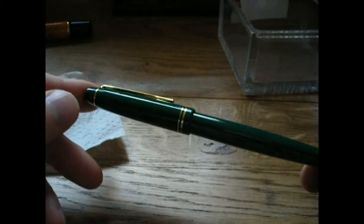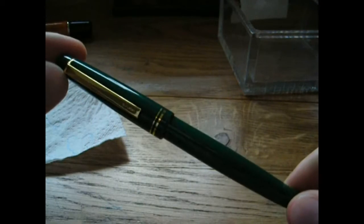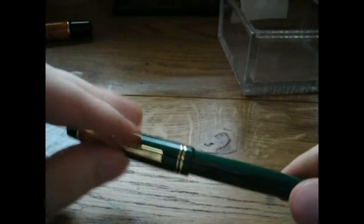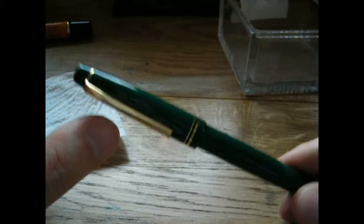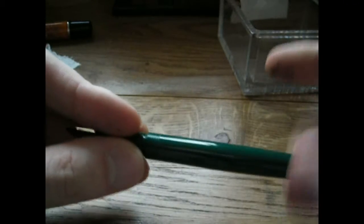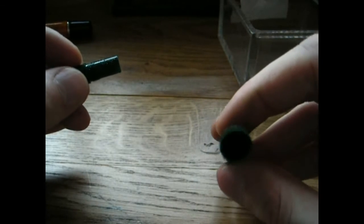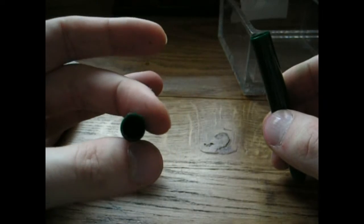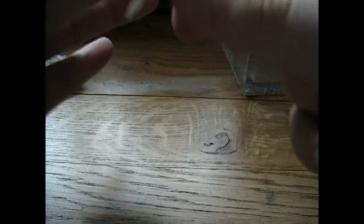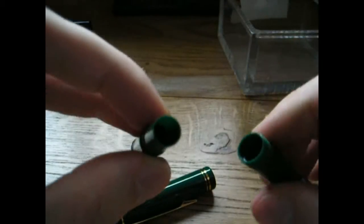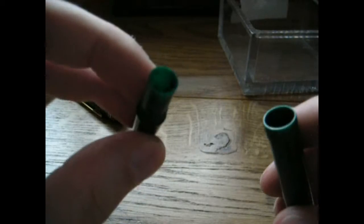Okay, eyedropper conversion of the Pilot 78G. Now, you can use this procedure on a number of pens, but not every pen. So I'd just like to make clear that it's your responsibility. If you want to try this and it doesn't work out, please don't blame me. What you would like to have is a pen that has a body that is entirely made of plastic, which is the case with this pen. The entire barrel is plastic. No metal parts that could rust from the ink.